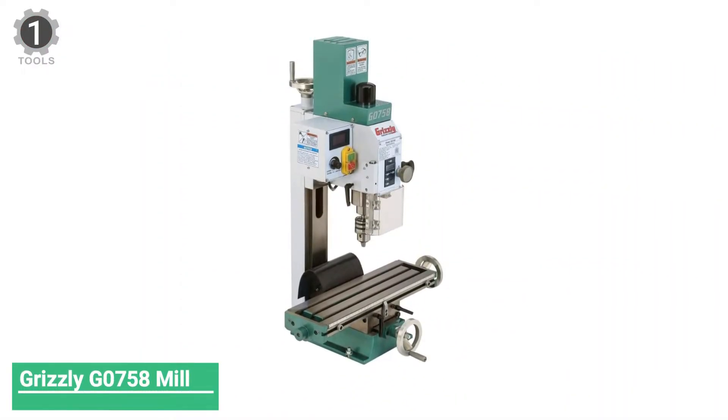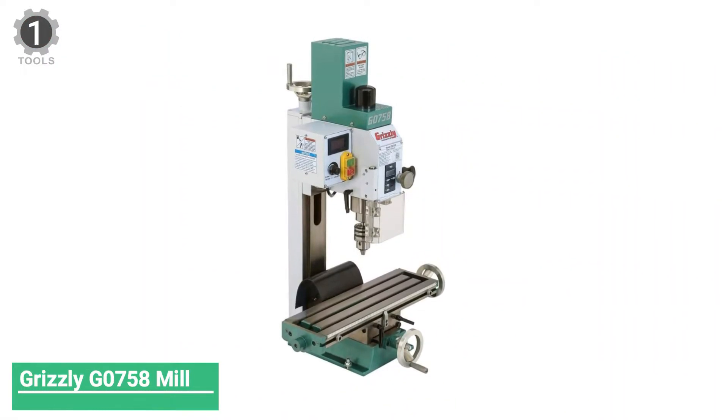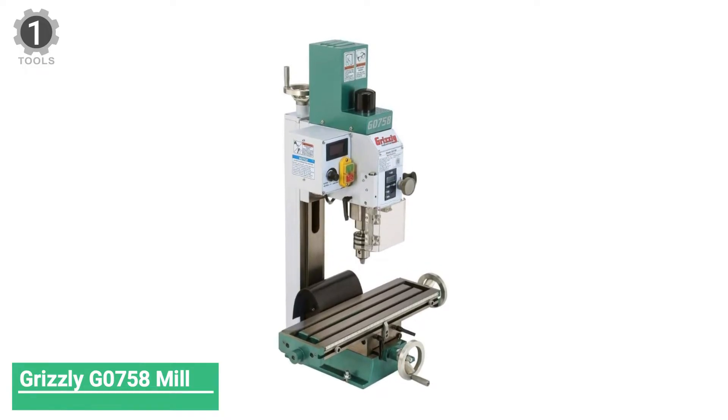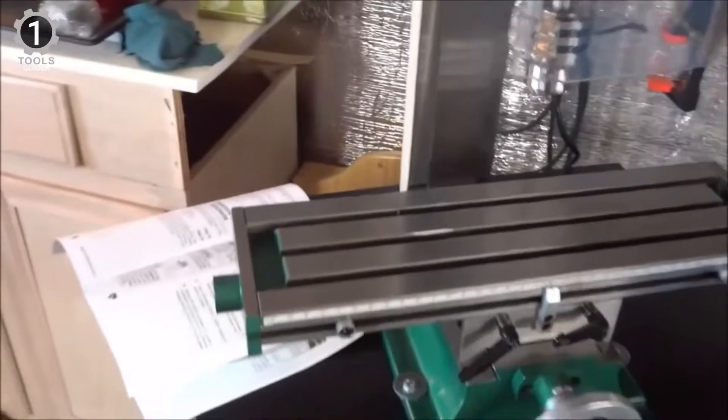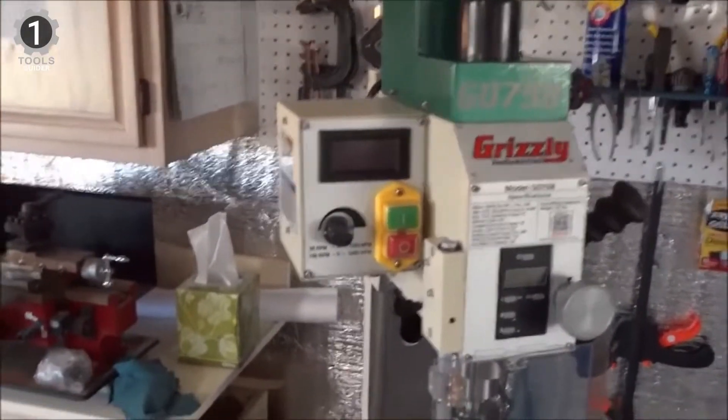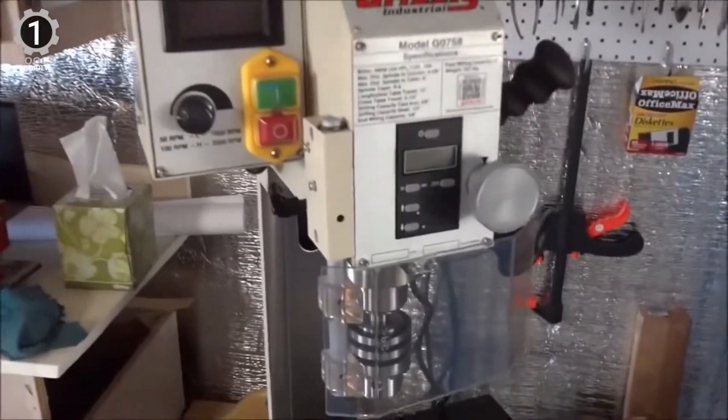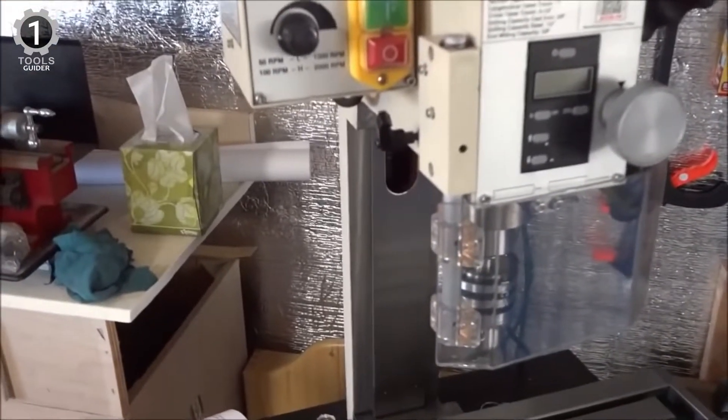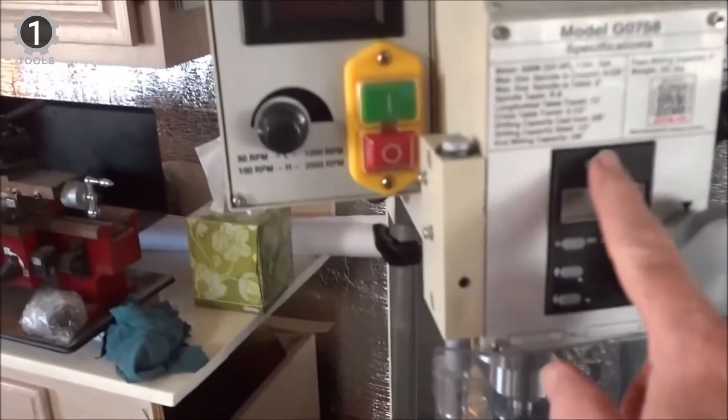Number 1. Grizzly G0758 Mill. The Grizzly G0758 is a reasonably large mini mill. Its table size sets this machine apart and makes it a great value. At massive 14.6 inches by 50.1 cm, it's one of the most extensive tables in a mill in this class.